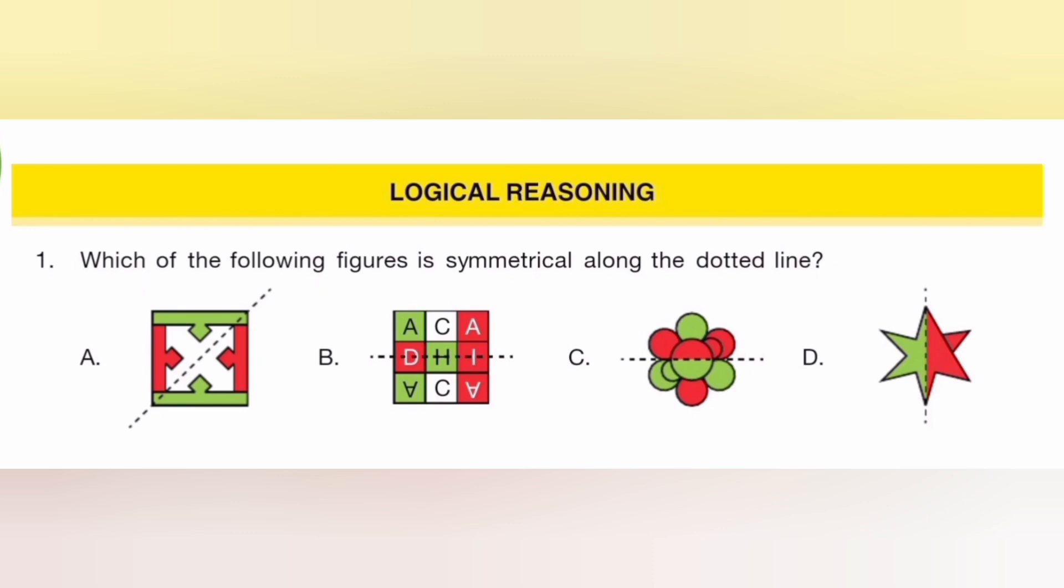Which of the following figure is symmetrical along the dotted line? The answer is B.